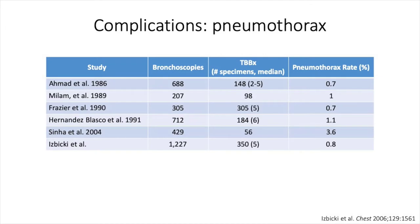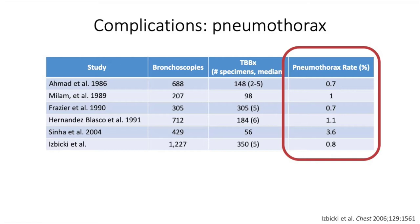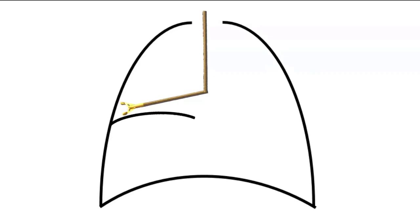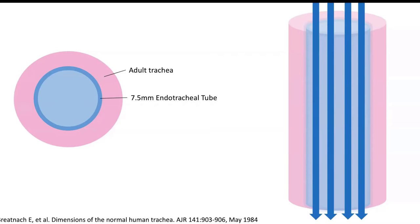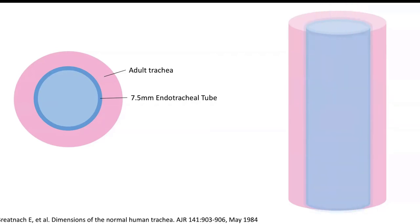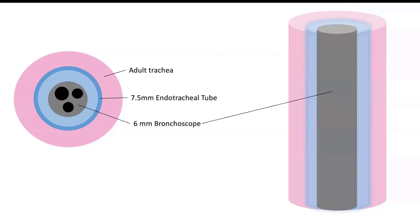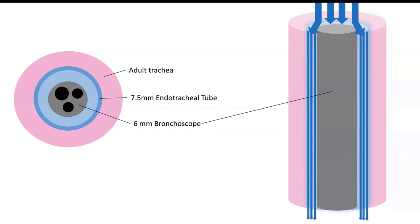Pneumothorax occurs most commonly following transbronchial biopsies, with reported rates as low as less than 1% or up to 6% in some studies. Even when performed correctly, visceral pleura may be disrupted. Cases have been reported of pneumothorax following bronchoscopy with BAL alone, or even airway inspection. This is rare, but more likely in intubated patients due to higher airway pressures when the bronchoscope is obstructing the endotracheal tube.